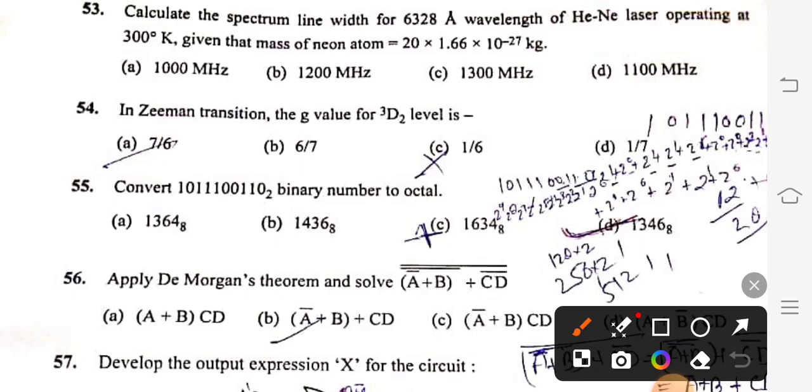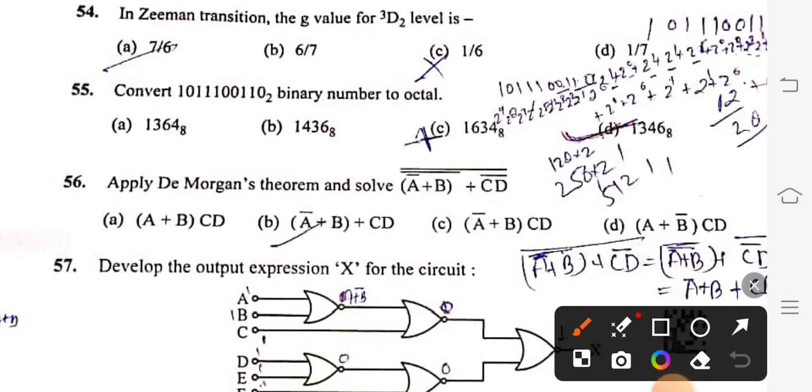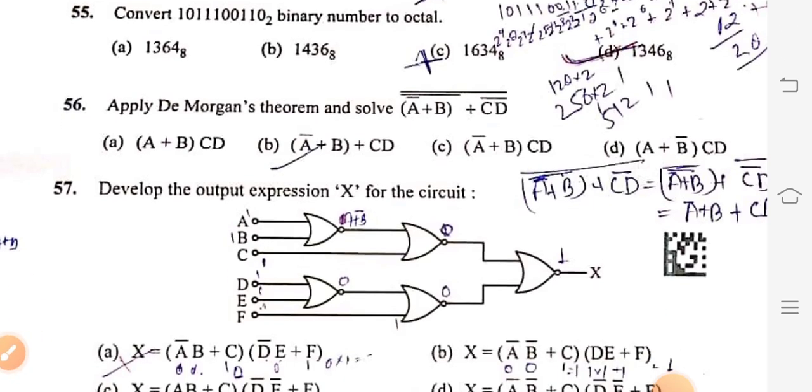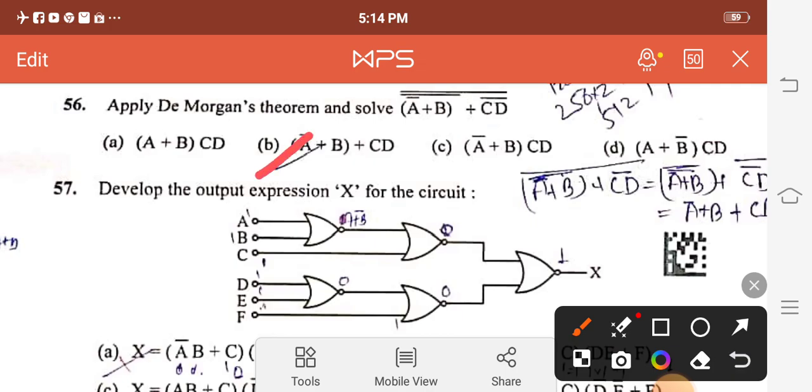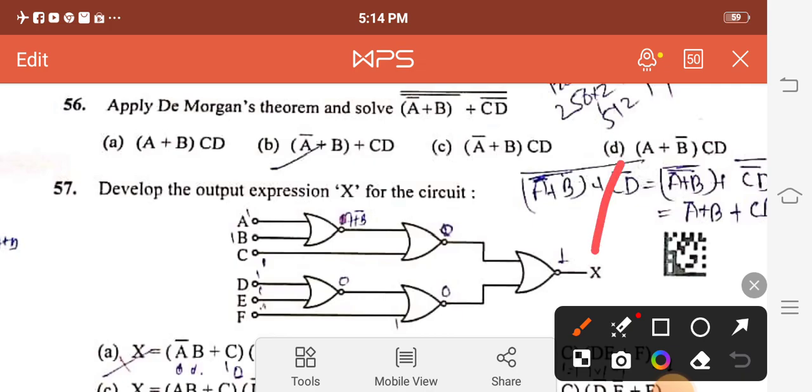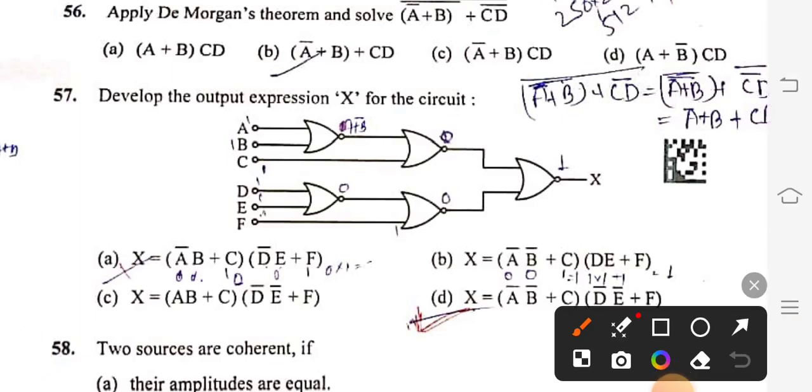Question 54: In Zeeman transition, the G value for 3D2 level is 7 by 6, option A. Question 55: Convert this binary number to octal number, right option is 1346, option D. Question 56: Apply D Morgan theorem and solve A bar plus B whole bar plus CD bar whole bar. Right option is A bar plus B plus CD. Question 57: Develop the output expression X for the circuit. Right option is option D.